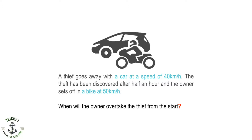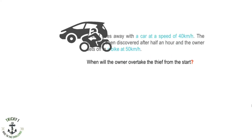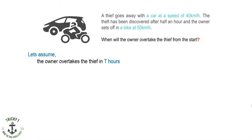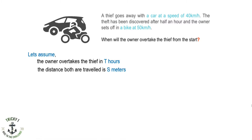This is a similar question to one we did earlier. Let's assume that the owner overtakes the thief in t hours, and the distance both have traveled is s. Using the equation distance equals velocity into time, for the thief the distance traveled is s equals 40 km per hour into the total time taken.